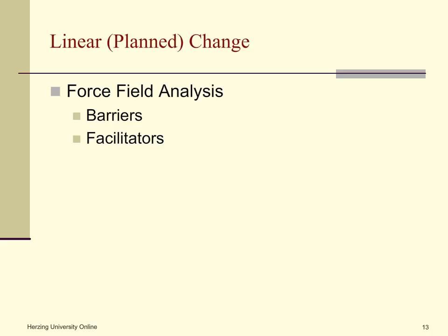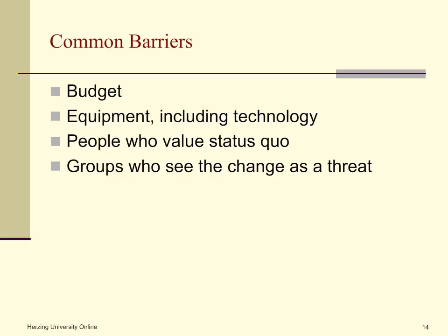A common way to view planned change is to use Lewin's force field analysis. This analysis allows us to look at all elements and situations to determine what barriers we must overcome and how quickly a change can occur. Barriers and facilitators can refer to elements of the change such as gaining information, securing funding, and having needed equipment including technology, or they can refer to people or groups of people. One common barrier is budget — if the change doesn't save money, at least in the long run, it will be difficult to secure support from administrators who have key accountability for costs.